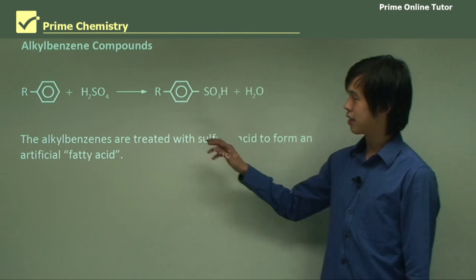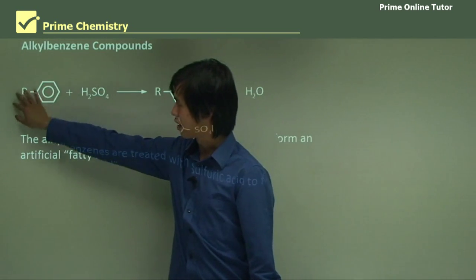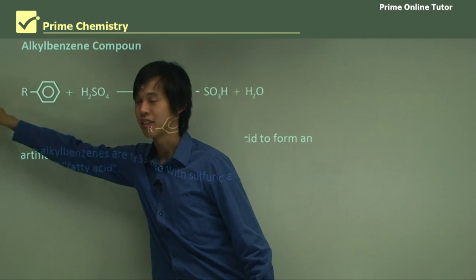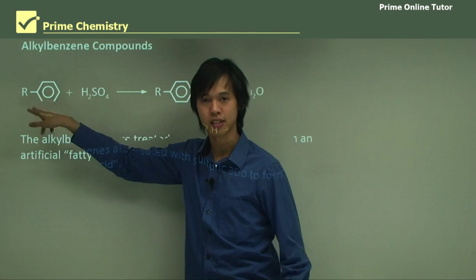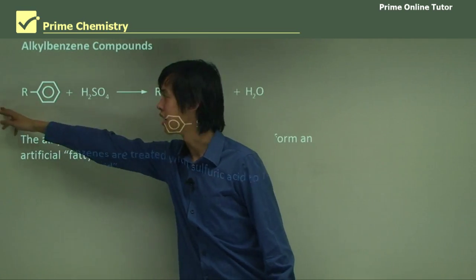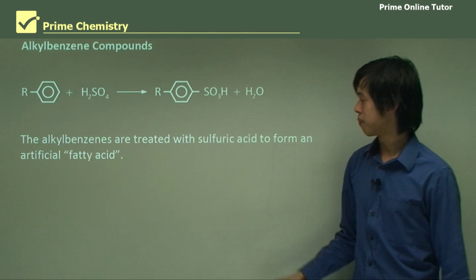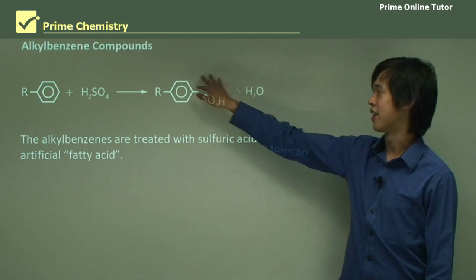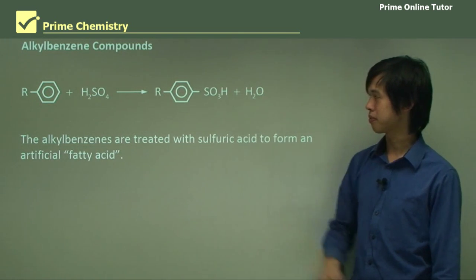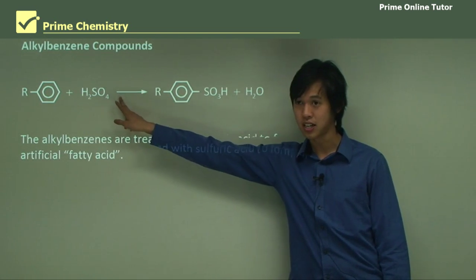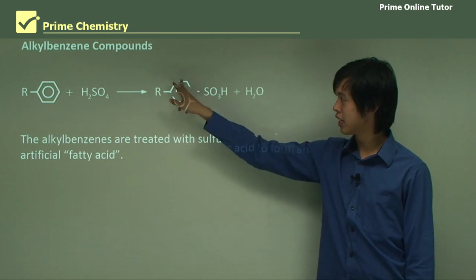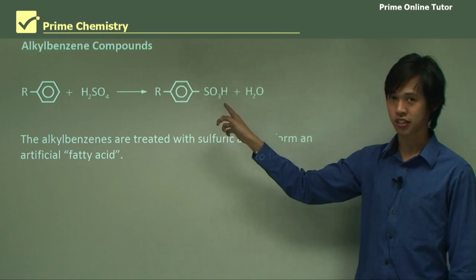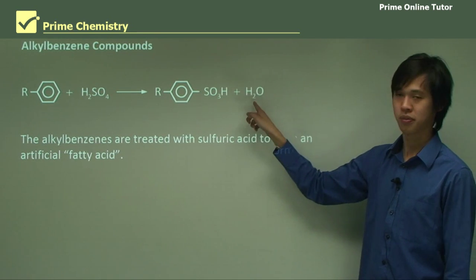So we have our alkane chain represented as R, and here's our benzene ring. What we do is we add it to sulfuric acid — we treat it with sulfuric acid to form what we call an artificial fatty acid. So here we have our artificial fatty acid: that long hydrocarbon chain R, with a benzene ring, a sulfite group, and an H. We also get H₂O as well.